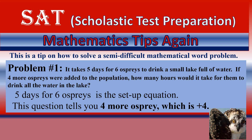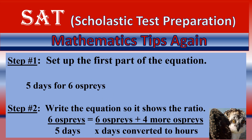Okay, five days for six ospreys — the beginning of the setup equation. Please make sure you read this carefully. It says four MORE ospreys — it does not say just four ospreys. It says four more than were originally there, so you know you have to add plus four. Here's the setup: numerator and denominator — five days equals six ospreys, plus four more ospreys.